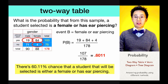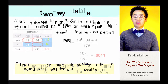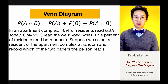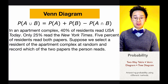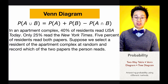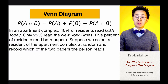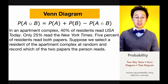Now let's work on the second method: the Venn diagram. For this problem, we use the formula P(A ∪ B) = P(A) + P(B) − P(A ∩ B). In this experiment, we're given the percentage of people who read USA Today and New York Times. In an apartment complex, 40% read USA Today, 25% read the New York Times, and 5% read both.